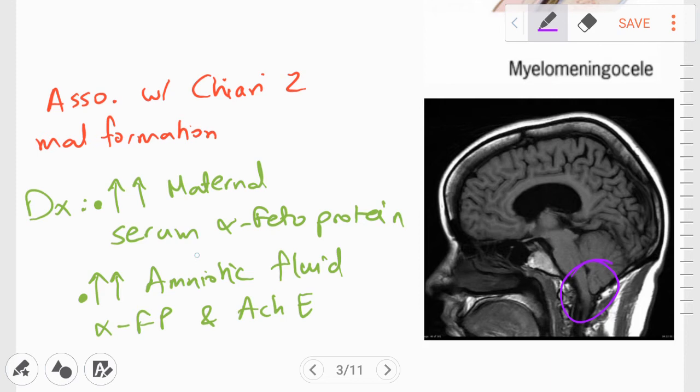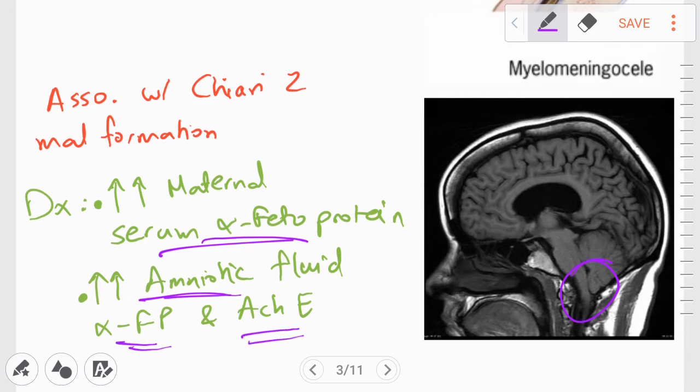The findings that you're going to see in the serum of the mother is increased serum alpha-fetoprotein, and if you check the amniotic fluid, you will find out that alpha-fetoprotein and acetylcholine esterase is also increased.